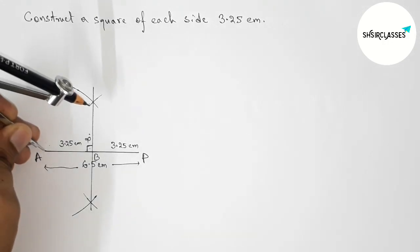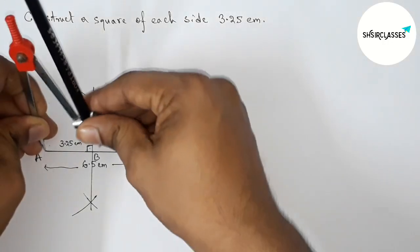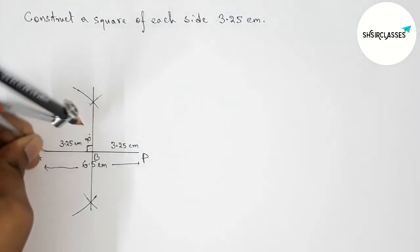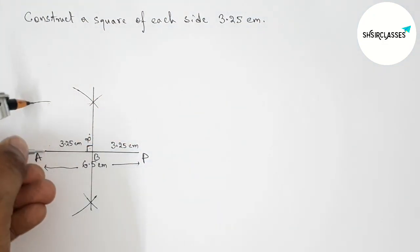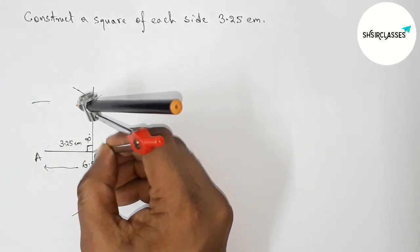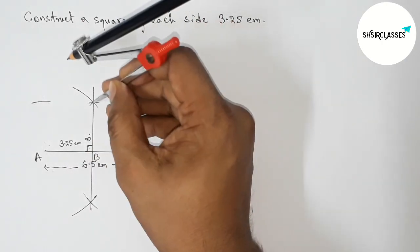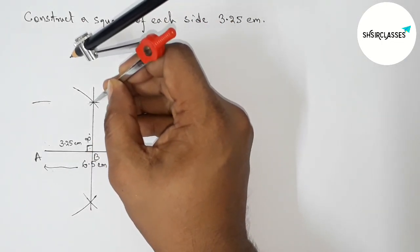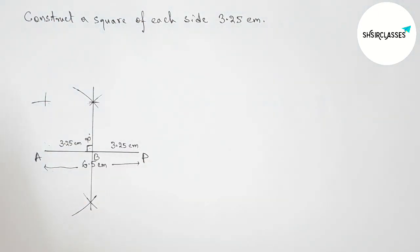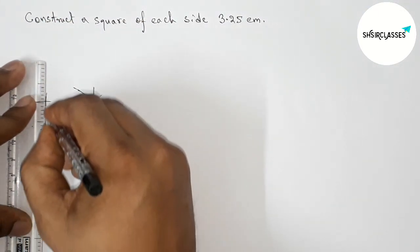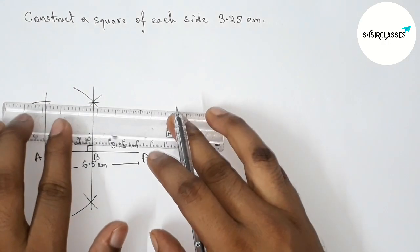Next, take the length AB, that is 3.25 centimeters, with the help of a compass and draw an arc. Put the compass on point B and take the same length and cut here. Again with the same length, put the compass here and cut here and cut here. Now first join this side, then join this side to get the required square.